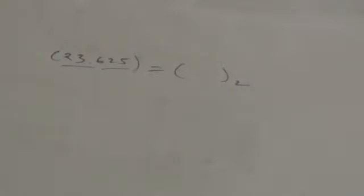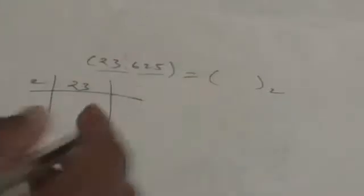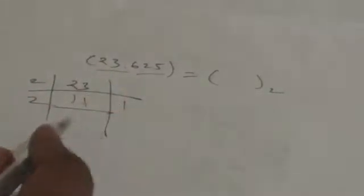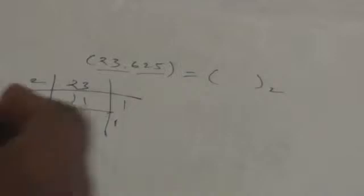First I am going to convert the integer part into a binary number. I will divide it by base 2. The quotient I get is 11 and the remainder is 1. Then again I divide this quotient by 2, getting quotient 5 and remainder 1. Then again I divide this quotient by 2, getting quotient 2 and remainder 1.